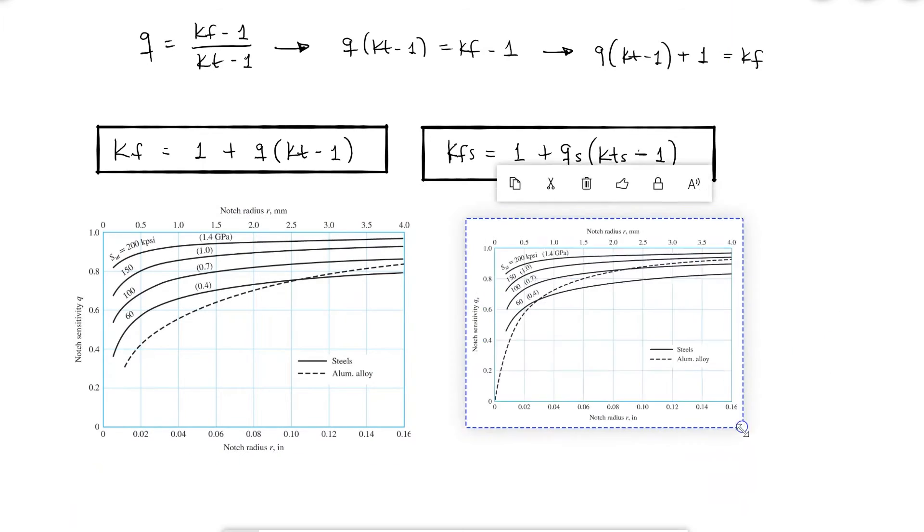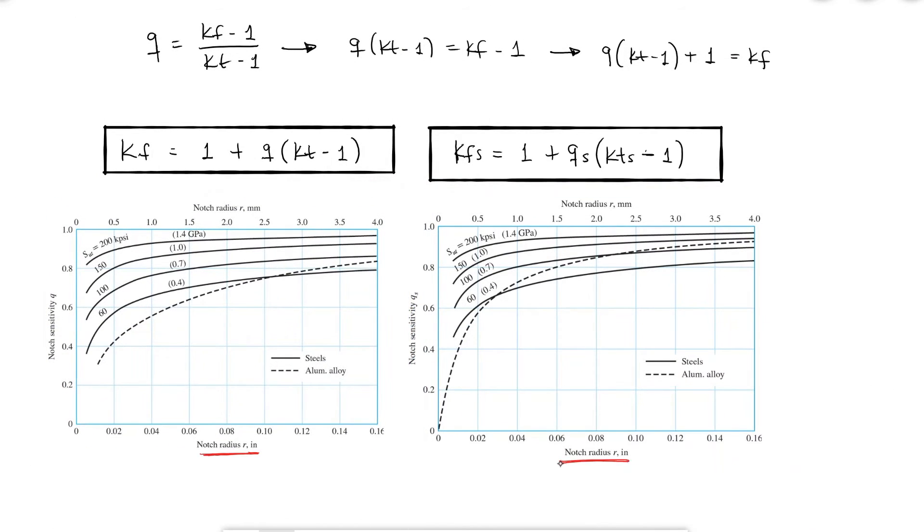Notch sensitivities will depend on the notch radius, x-axis, and sometimes the ultimate strength of the material, represented by the different curves. And since they are the result of experimental measurements, they are also material specific. For example, notice that not only the values but also the behavior of steels is different to that of the aluminum alloys.